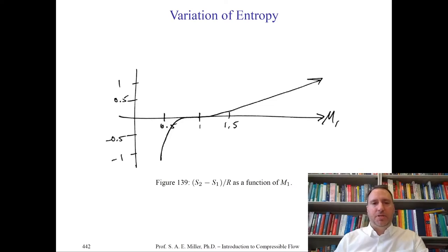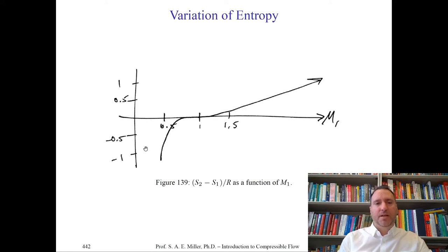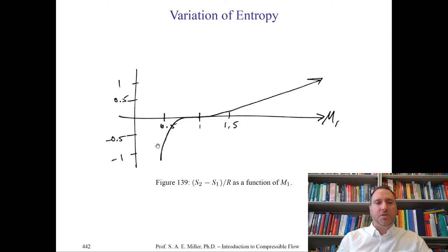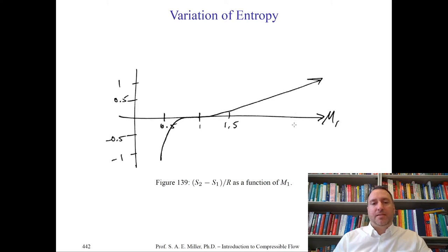A graph of entropy change ΔS versus M1, with values at 0.5, 1, and 1.5, shows that at M1 = 1, ΔS = 0. At M1 = 1.5, ΔS is positive and slowly rising. For M1 < 1 — physically impossible — the curve drops sharply, showing large entropy losses. To the right of M1 = 1, entropy always rises, which is physically correct for a standing normal shock.